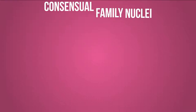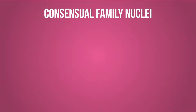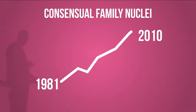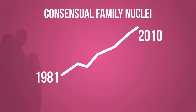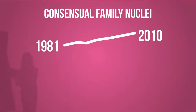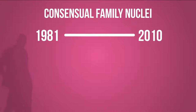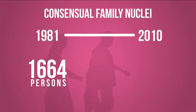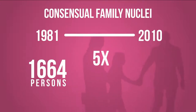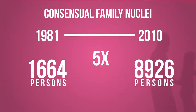Persons living together without being married to each other form consensual family nuclei. Between 1981 and 2010, a considerable growth was observed in the number of these consensual family nuclei. While in 1981, 1,664 persons lived together as a couple without being married to each other, in 2010 this number increased by a factor of 5, to a total of 8,926 persons.